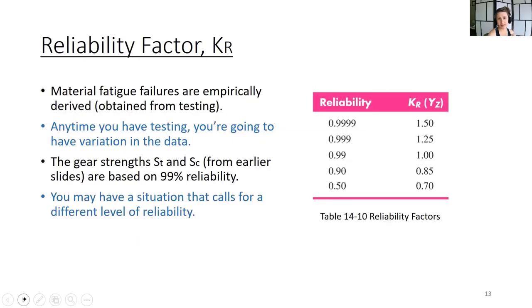And then reliability factor. This is exactly the same as it was in fatigue. And the concept is the same as well. Material fatigue failures are empirically derived, so they're obtained from testing. And anytime you have any type of testing, you're going to have variation in your data. So the gear strength ST and SC are based on 99% reliability. You may have a situation that calls for a different level of reliability. So you would just simply use the KR from this value. There's no equation for it. Just copy paste it into your Excel tool.